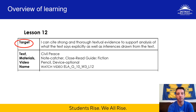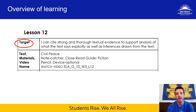The learning target for today is: I can cite strong and thorough textual evidence to support analysis of what the text says explicitly, as well as inferences drawn from the text. Your job today is to go back into the text, Civil Peace, and pull out strong and thorough textual evidence that will support a deeper analysis of the text.